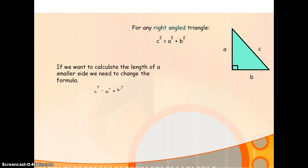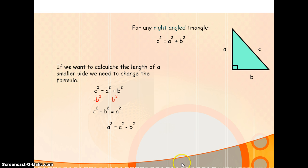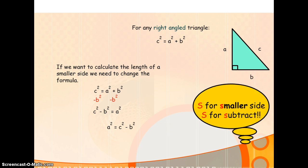If we want to find side a, we start off with the formula we have and take b squared away from both sides, leaving us with a squared being equal to c squared minus b squared. You don't want to find a squared — you want to find a, so we square root to get our answer. A helpful way to remember this: S for shorter side, S for subtract. If you're looking for the shorter side, your starting formula should have a subtraction.